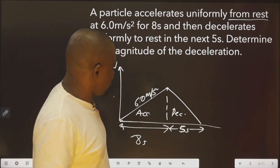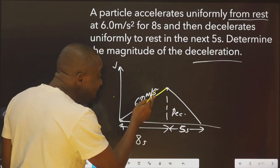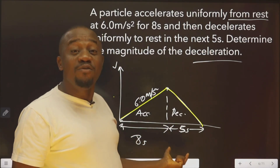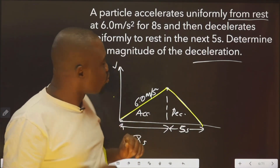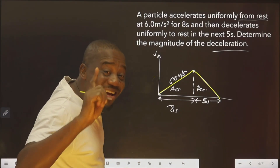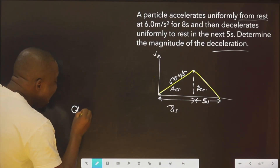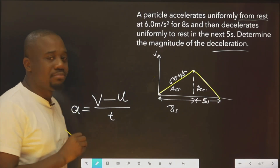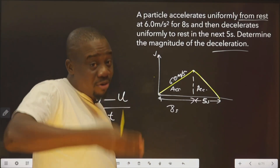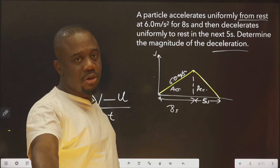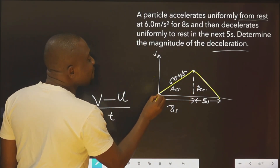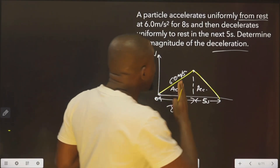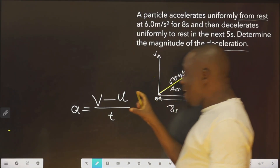Determine the magnitude of the deceleration. As you can see, the acceleration value was given to us on the graph, but nothing was given for the deceleration side. What was only given was the time; the velocity was not even given. Acceleration or deceleration is always a = (v − u) / t. We are going to consider each leg separately.